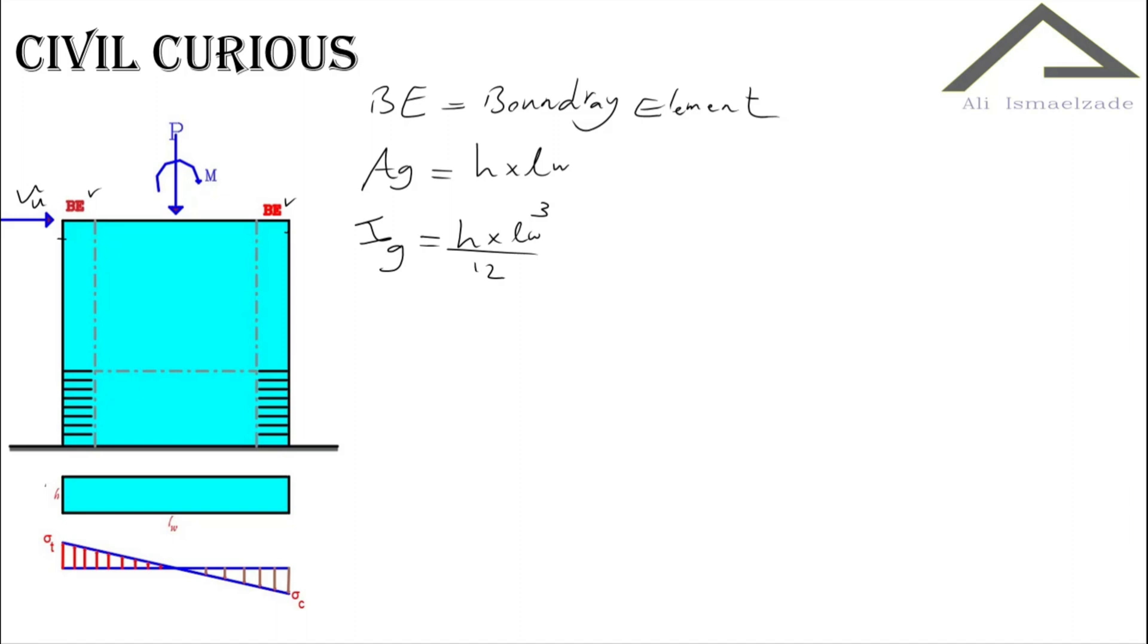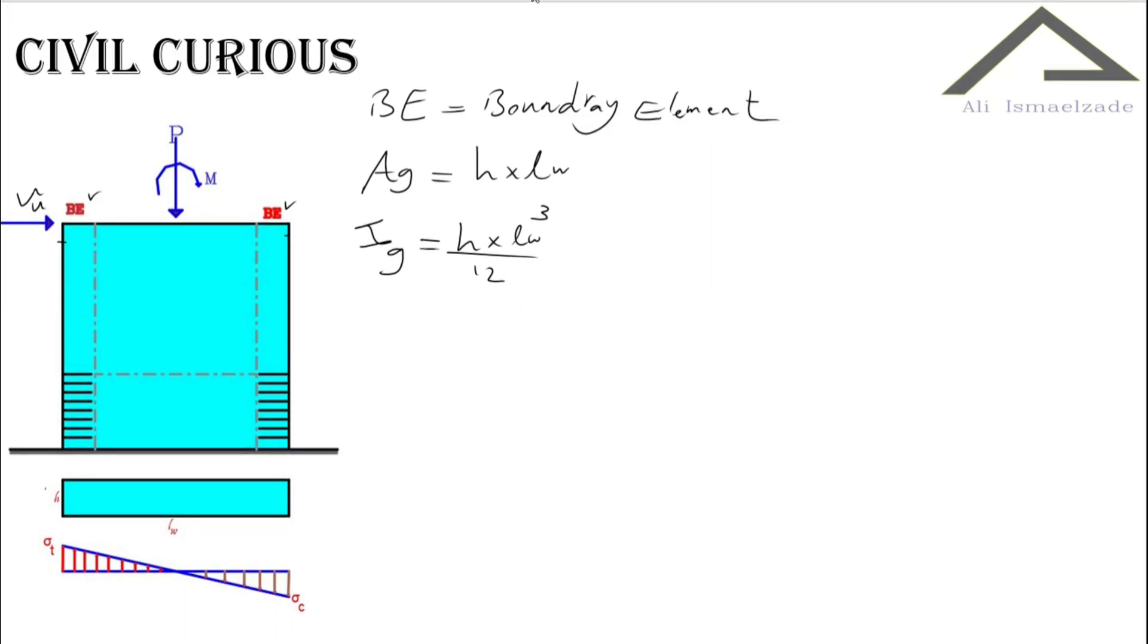So now let's find the tensions, the compressive tension. The maximum of compressive tension is axial force divided by gross section H times LW plus M times LW divided by 2. We have this area that we call it L divided by 2, divided by gross section H times LW to the power of 3 divided by 12.